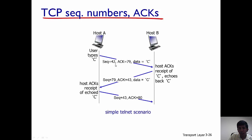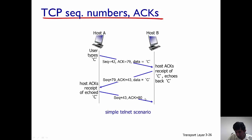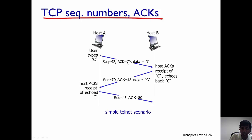Host B sends acknowledgement 43 because that is the next byte it wants to receive — it received 42, so it acknowledges 43. The sequence number from B to A is 79, because the segment from A to B had acknowledgement 79, indicating that host B's sequence number starts at 79. Similarly, when host A receives the segment from B, it uses sequence number 43 (from the acknowledgement), then acknowledges 80 because the sequence number was 79 and one byte of data was sent.